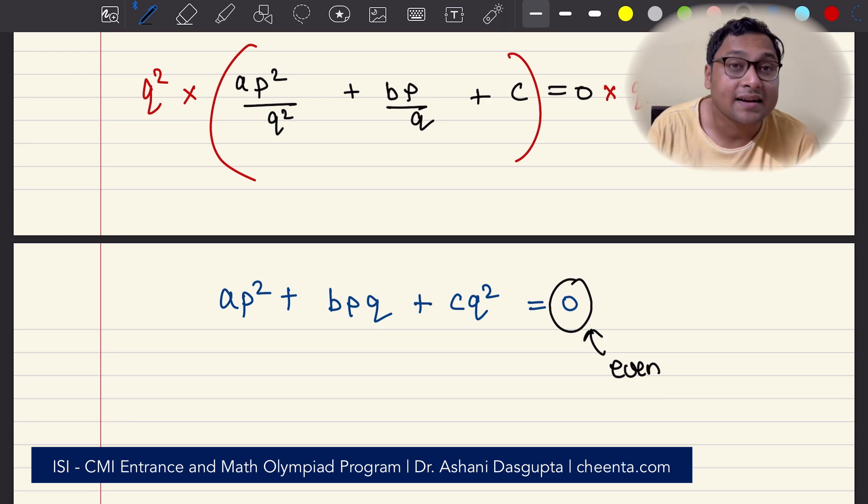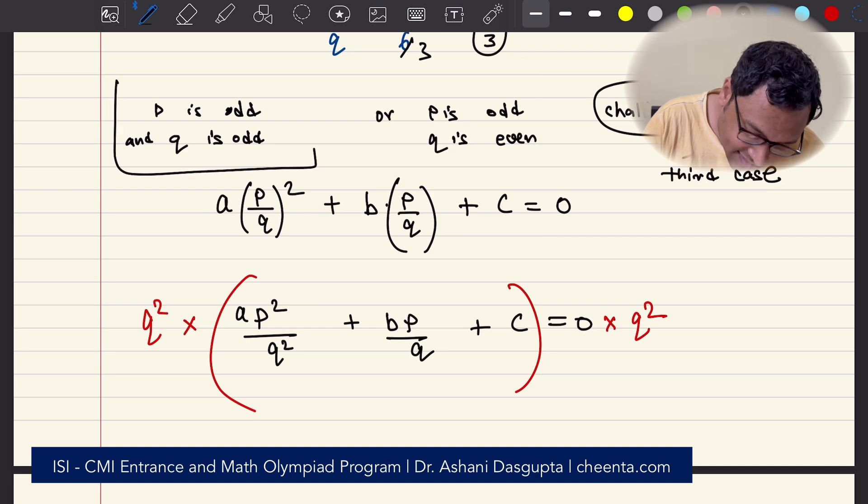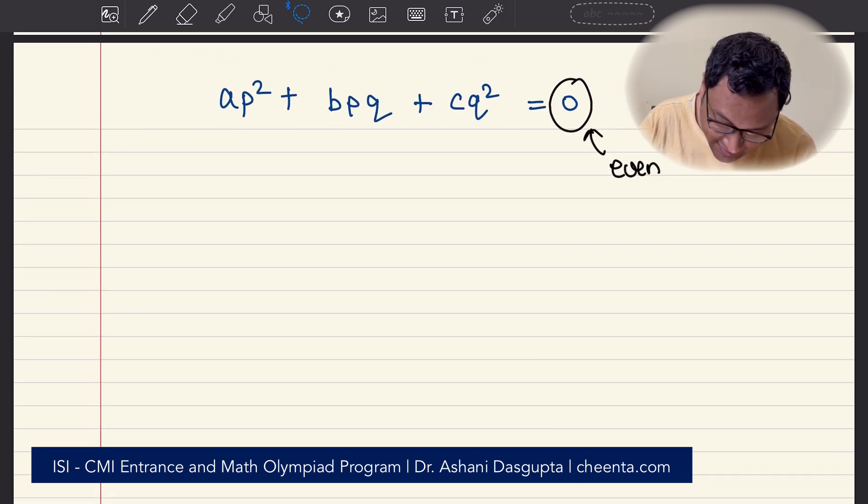Let's look at the left-hand side. We will consider the first case: P is odd, Q is odd. Let's consider that.